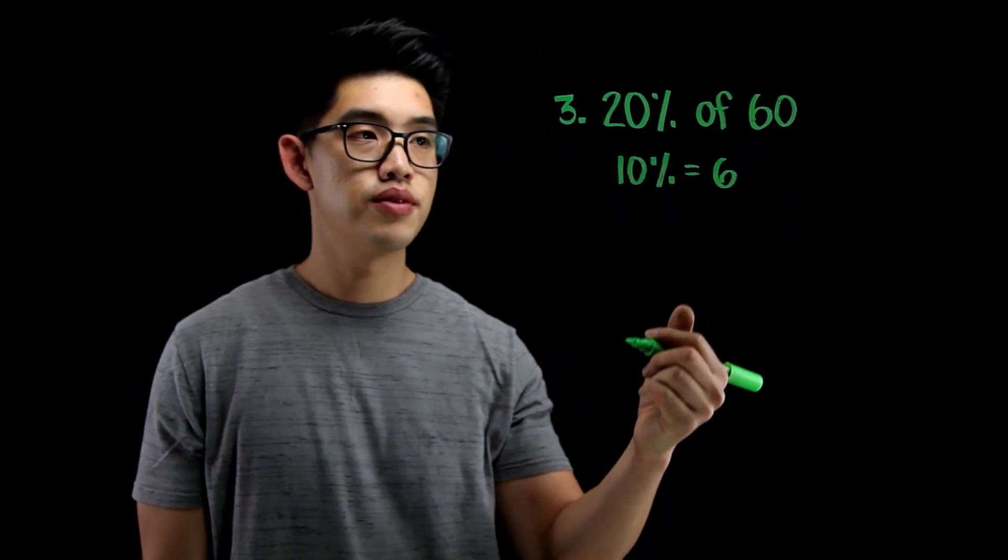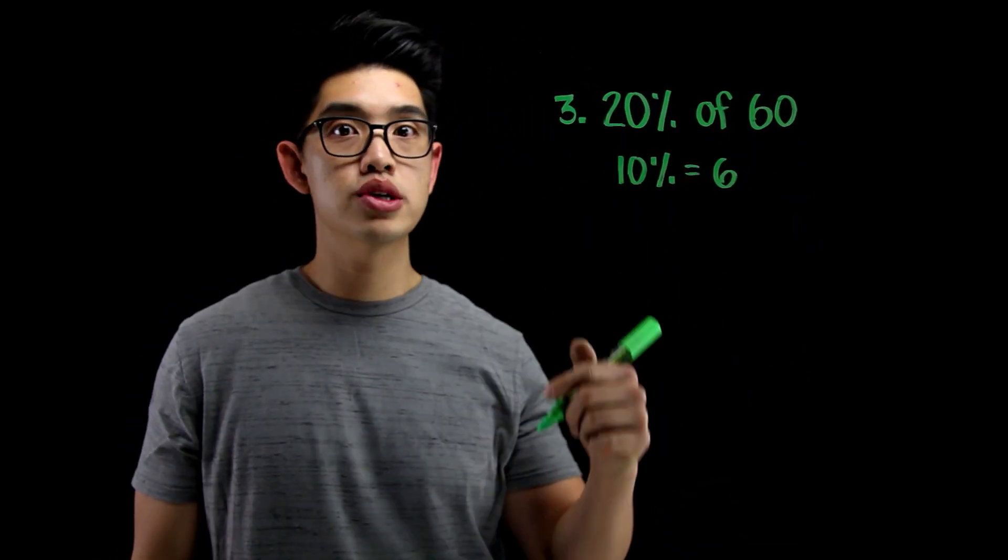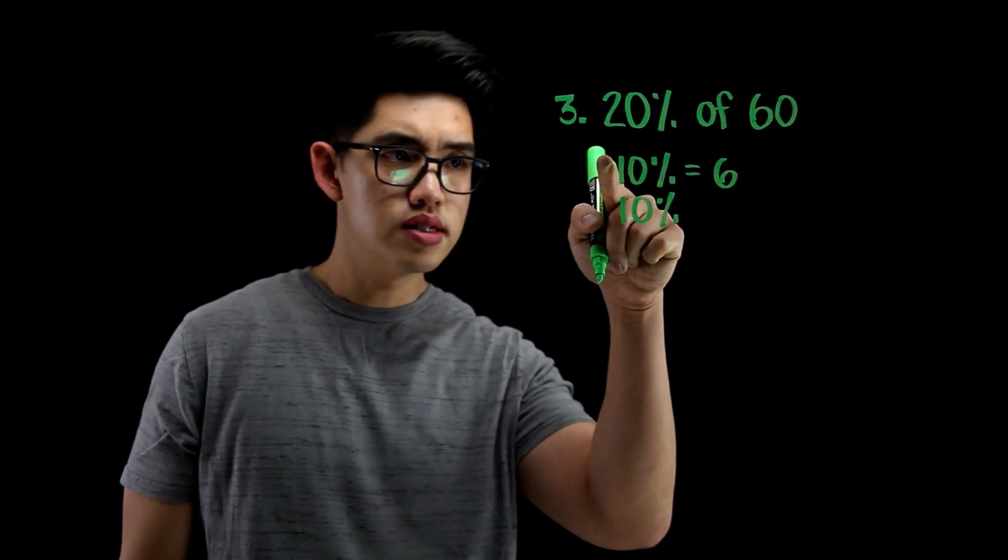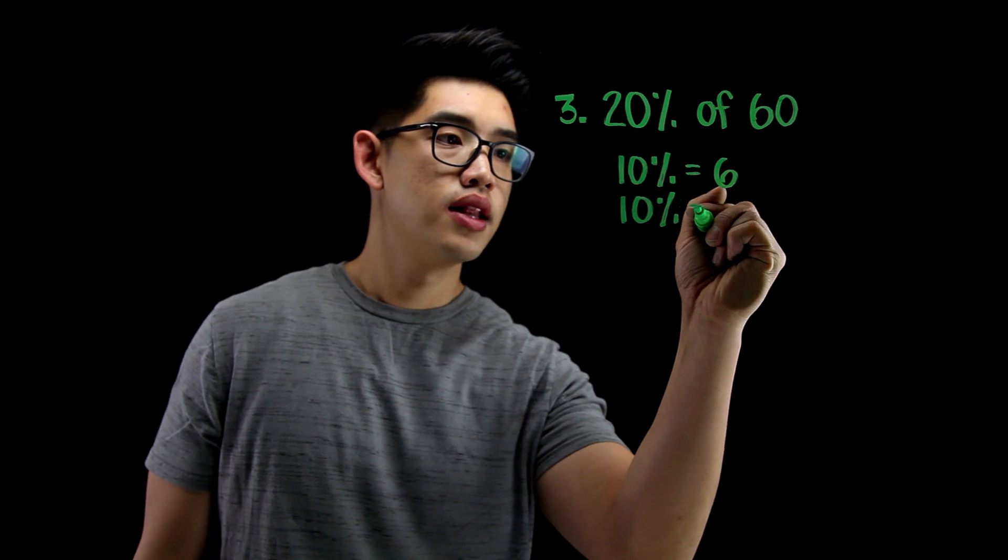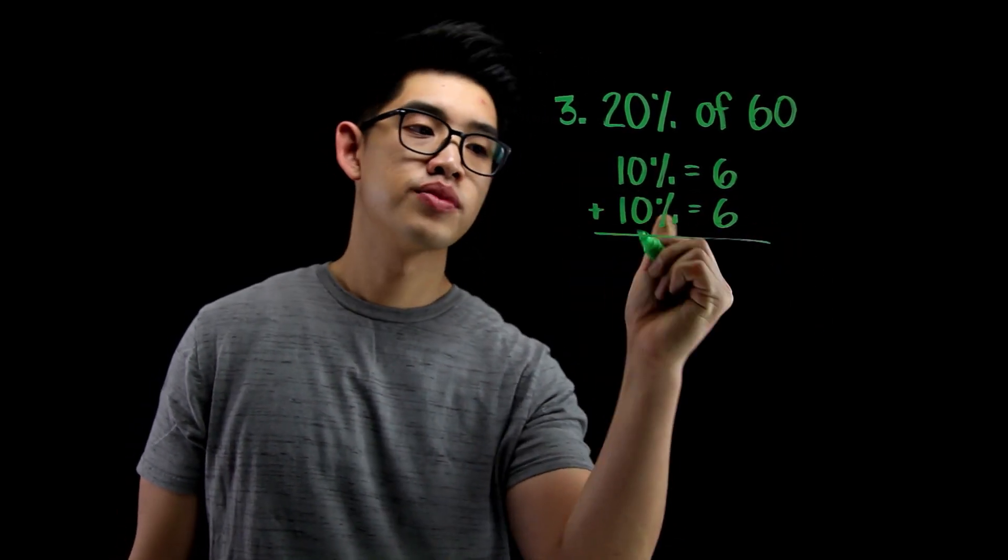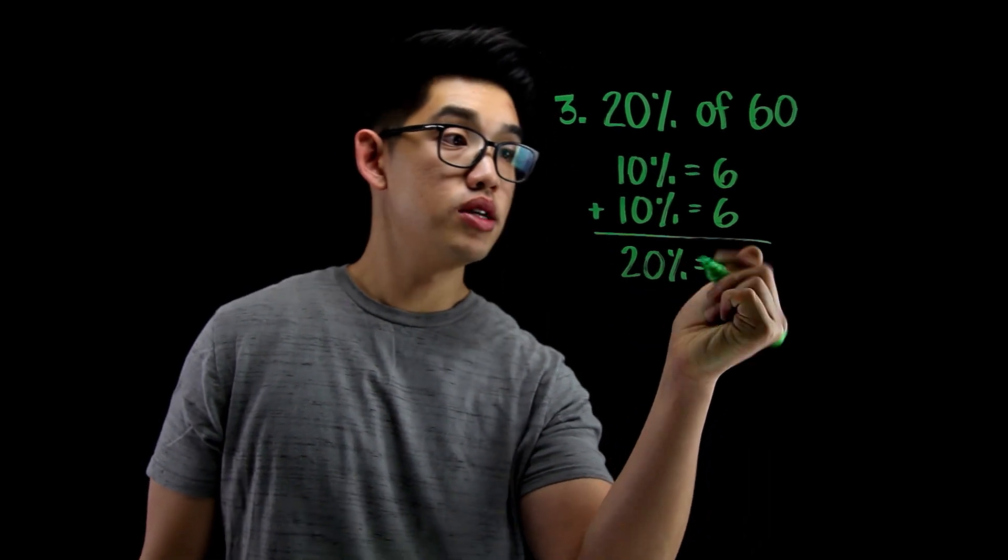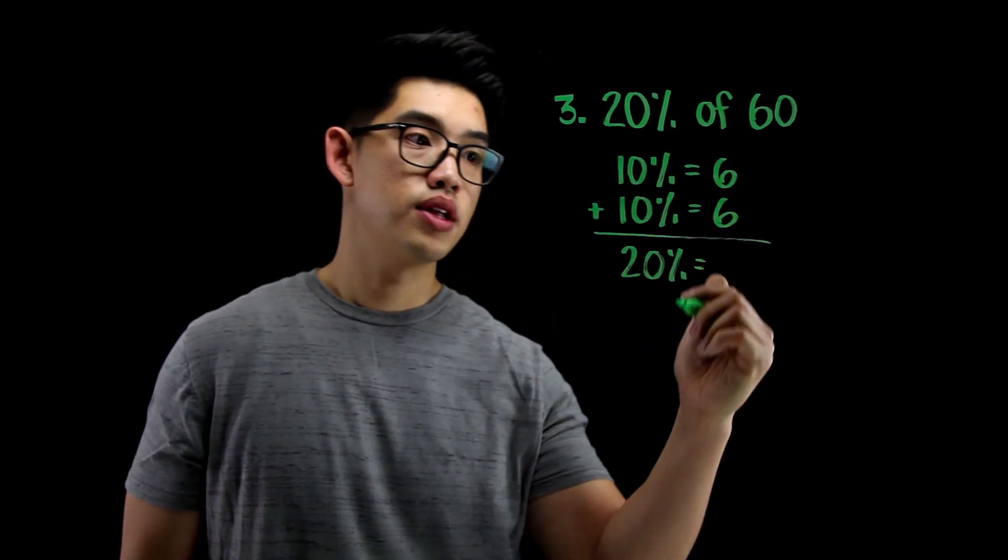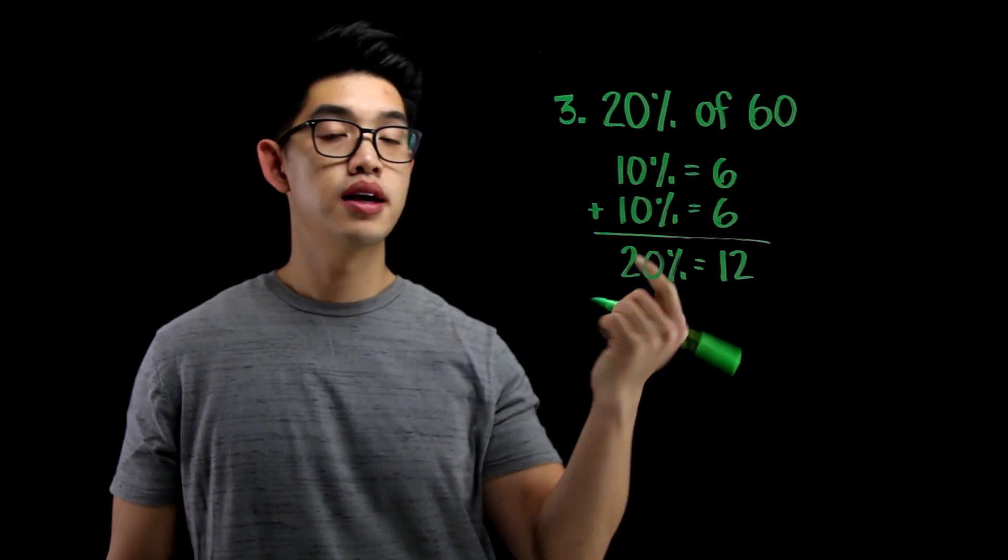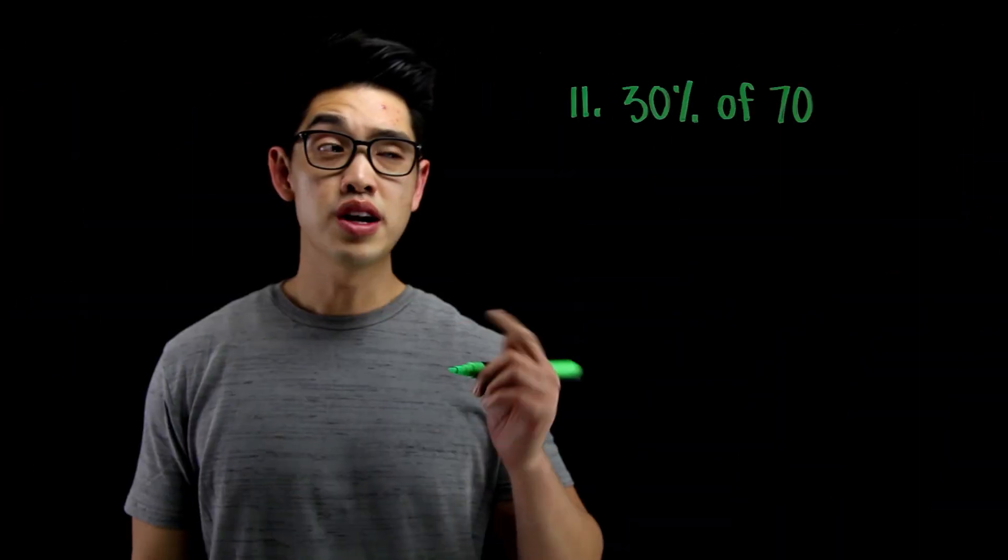But I don't want 10%, I want 20%. So I need another 10%, because 10 plus 10 equals 20%. That's the same thing as 6. If I add up these two 10%, I get 20%, and I can add up these two numbers right here. 6 plus 6, that's 12. And that's your answer. 20% of 60 is just 12.